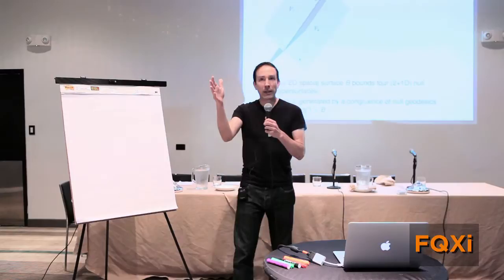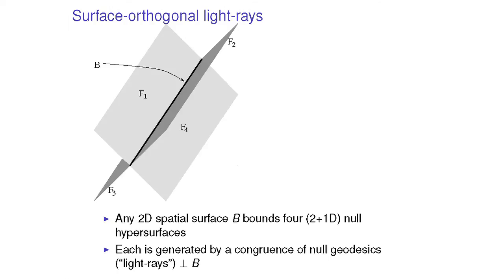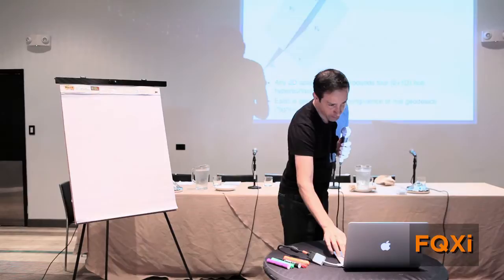And so you can go backwards. You can start by picking a surface, and you can construct null hypersurfaces, two-plus-one-dimensional surfaces, and two of the directions in them are space-like and one is light-like, four directions away from any two-dimensional spatial surface. And in fact, you can do this locally. Here, I've just drawn a piece of a spatial surface, the black line. Of course, I had to suppress one spatial dimension, but I hope it's okay. And I've shown you the four orthogonal directions.